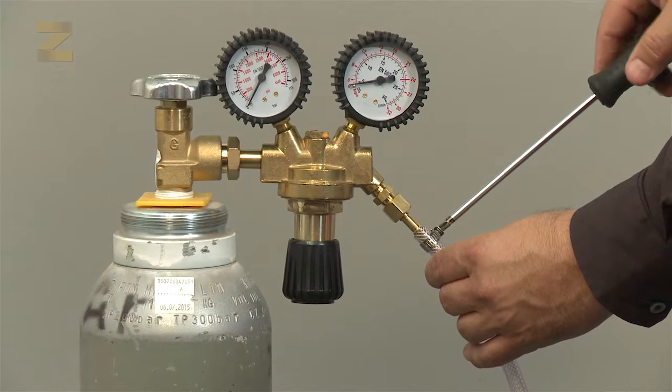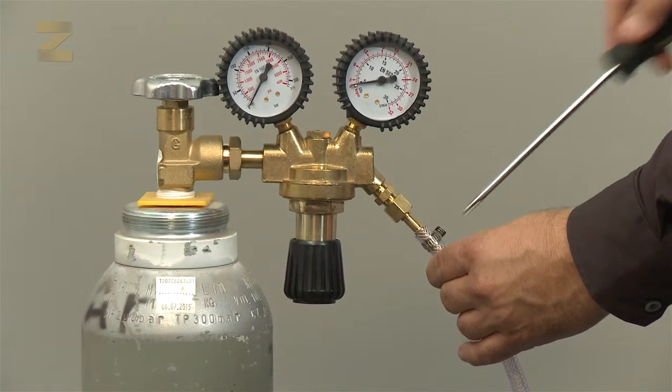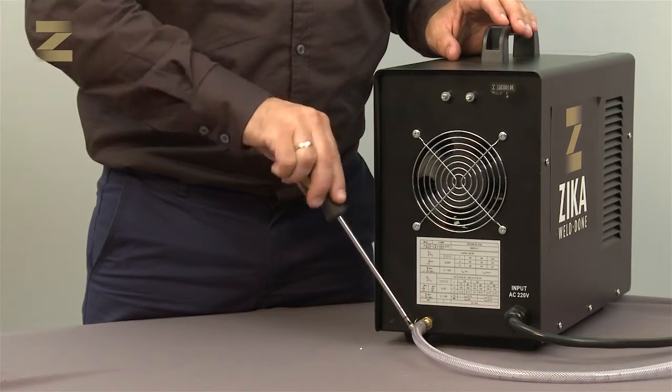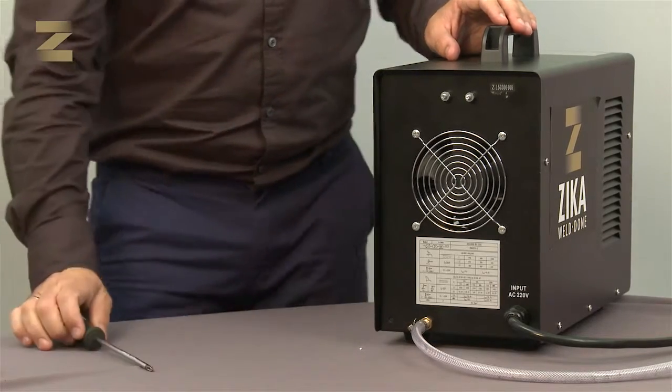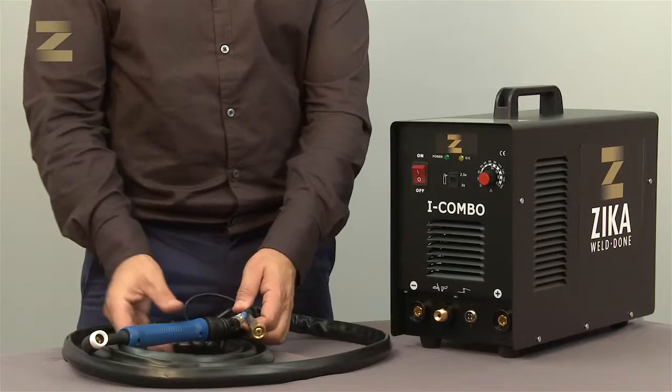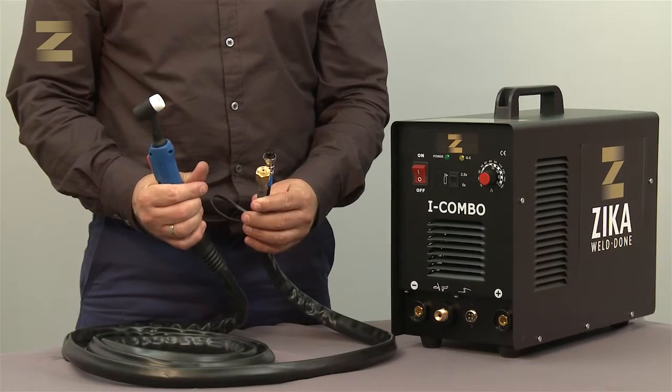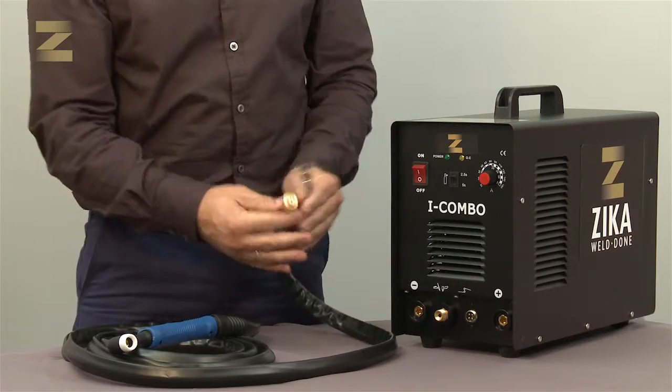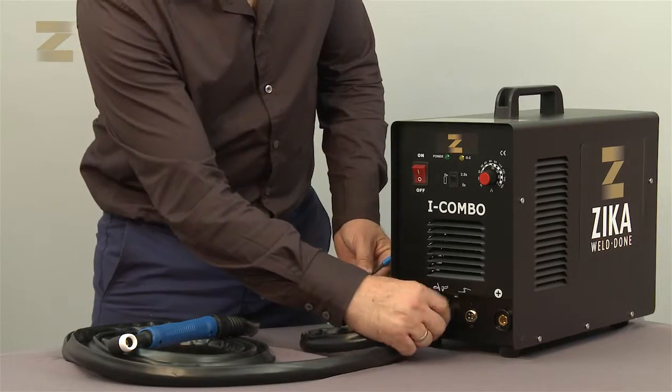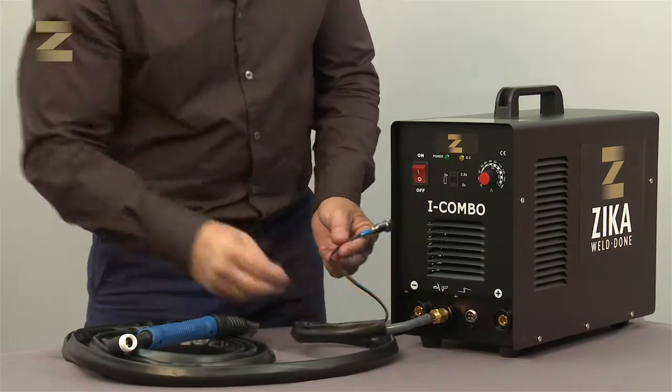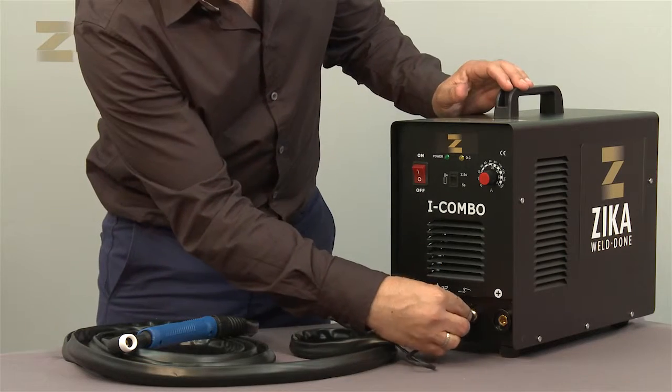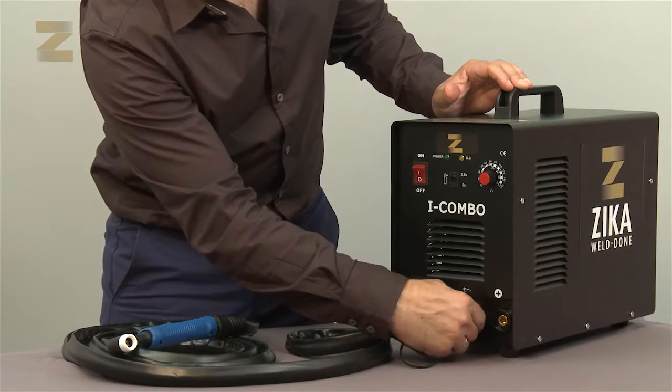Connect the air tube to the corresponding argon gas regulator and connect the other end to the gas inlet at the back of the machine. Secure with a band. The TIG handle has two connections: a gas connection that has to be connected to the right connector on the panel and the electrical plug that has to be inserted to the corresponding inlet on the panel.